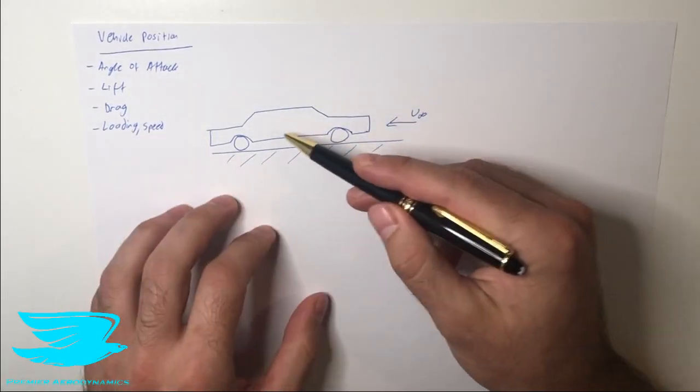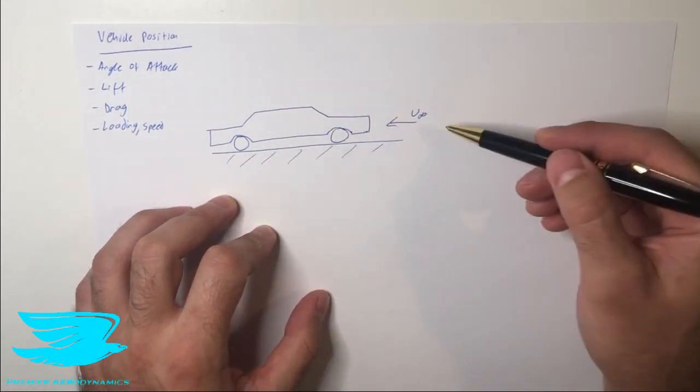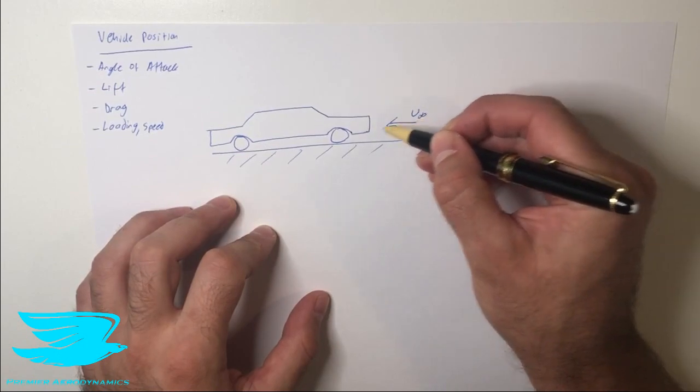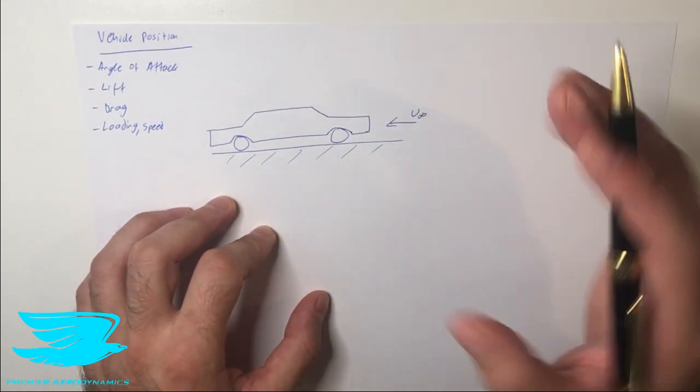So to begin with we have a car here and we have the ground. It's on the ground driving along and we have a free stream velocity of whatever, it could be 10 meters per second, 20 meters per second, whatever.